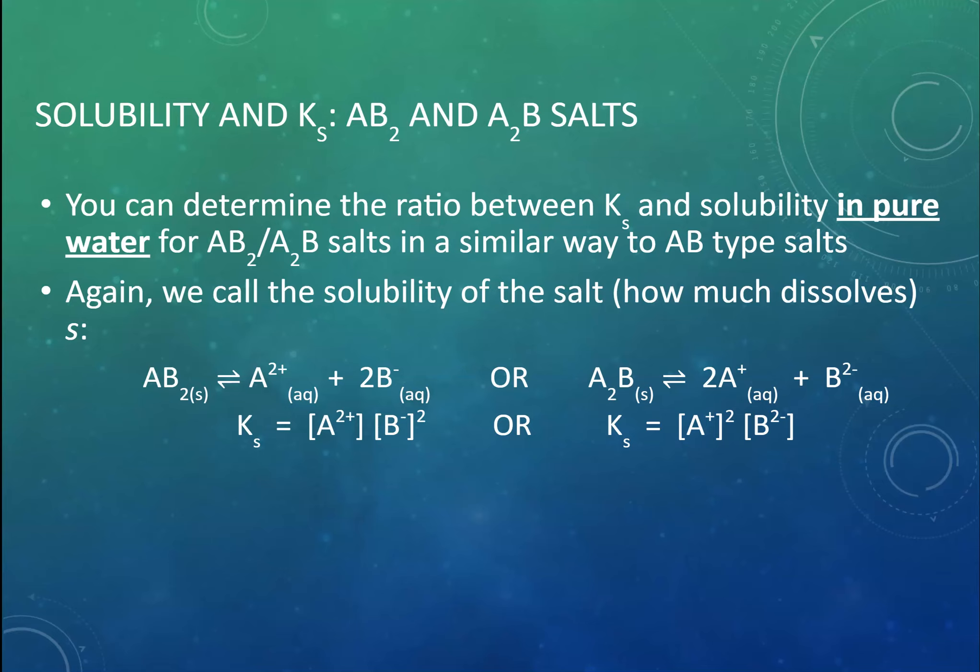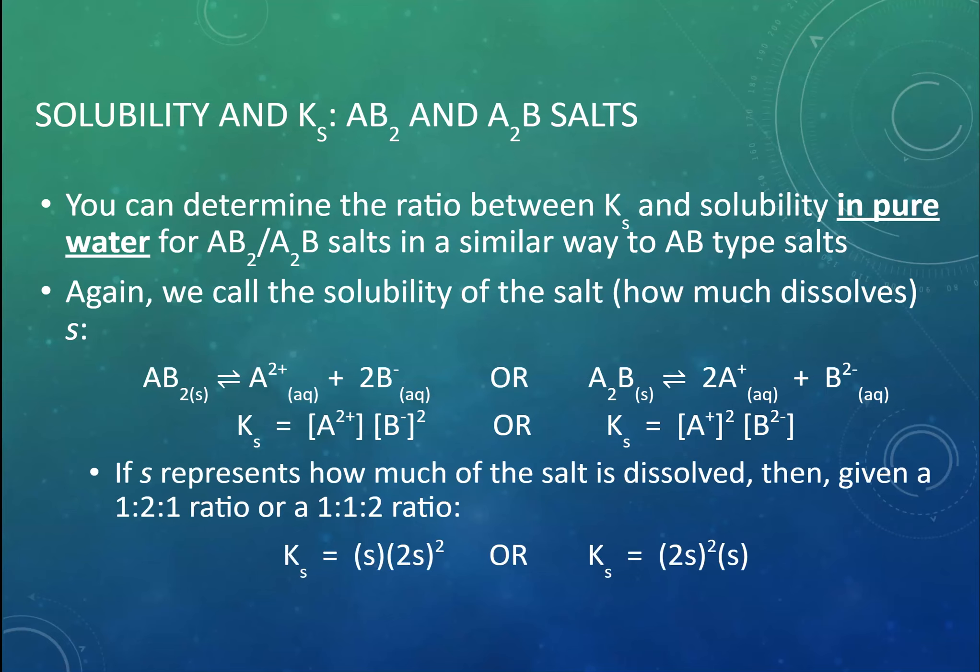Similarly with our A₂B we've got two lots of A⁺ so 2S and one lot of B⁻ which is S. We can substitute those numbers in and simplify that expression down. So Ks is the equivalent of 4S³ or S is the cubed root of Ks over 4.